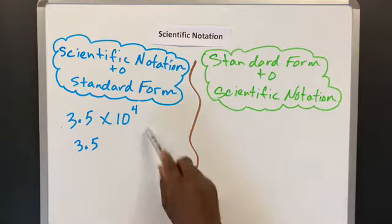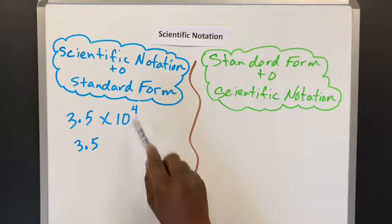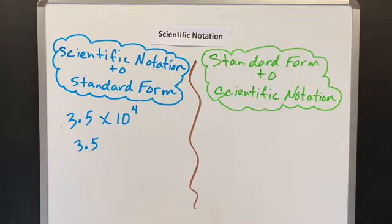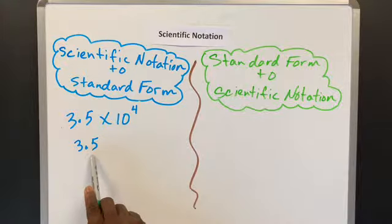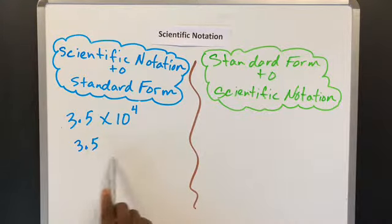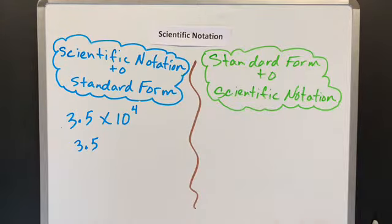And now, because this exponent is positive, that's telling us some instructions. In fact, what it's telling us to do is to move this decimal here to the right in that direction, four spaces. So we're going to go ahead and do that.